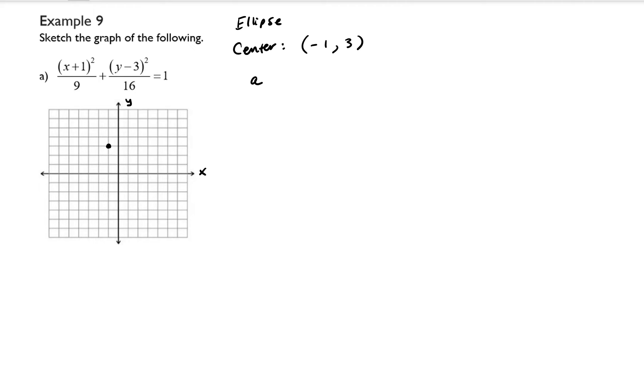So we also have to remember that a > b > 0 which tells us that the 16 has to be our a² value and then the 9 has to be our b² value. So a² = 16 and b² = 9. So if we take the square root of both sides we end up getting a = 4 and we get b = 3.